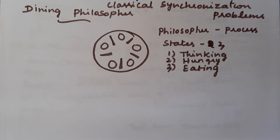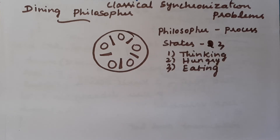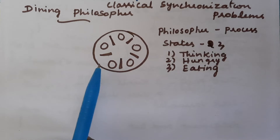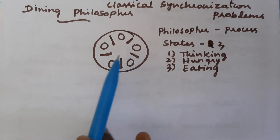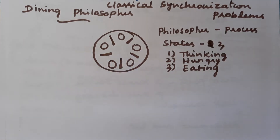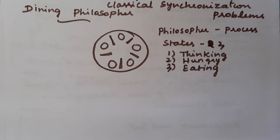They need two chopsticks to hold the food. In the same way, this Dining Philosopher problem is designed — instead of chopsticks they use forks. In some textbooks it is given as chopstick, in some textbooks it is given as a fork.